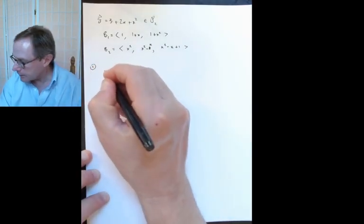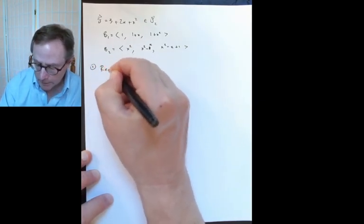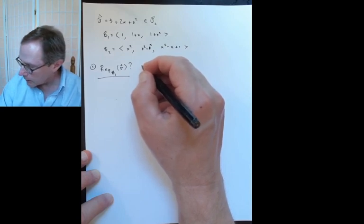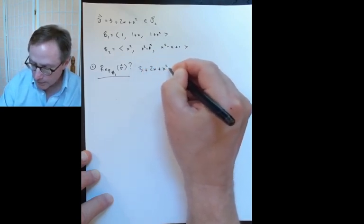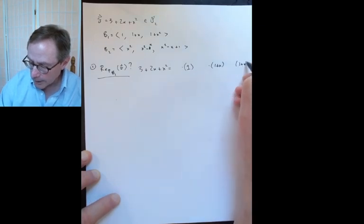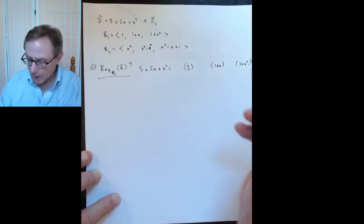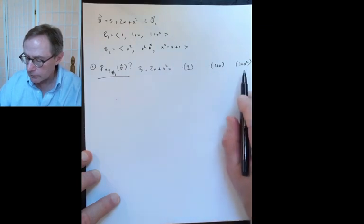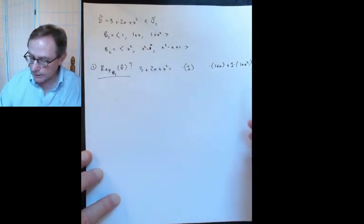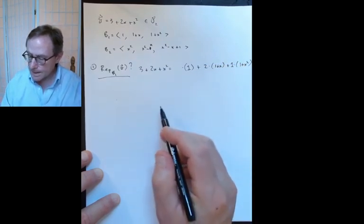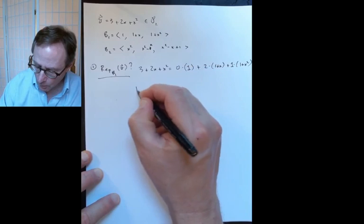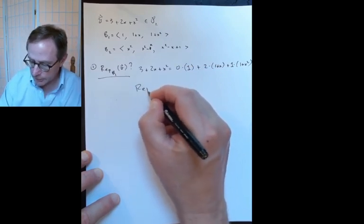The first question asks me to represent this vector with respect to B1 and B2. For the representation with respect to B1, I write 3 plus 2x plus x squared and figure out how many 1s, how many 1 plus x's, and how many 1 plus x squareds it takes. There's only 1 x squared on each side, and only 1 x on each side, so those coefficients must match. For the constants, 1 plus 2 is 3, so I don't need any of those. Just because I could do it by Gauss's method doesn't mean I should — I can just eyeball the answer.